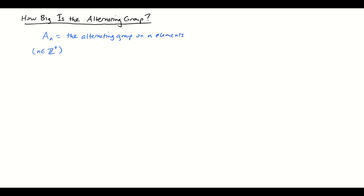We define A sub n to be the set of all sigma — all permutations in S sub n, the symmetric group on n elements — such that sigma is even. And as always, even means sigma can be written as a product of an even number of transpositions.